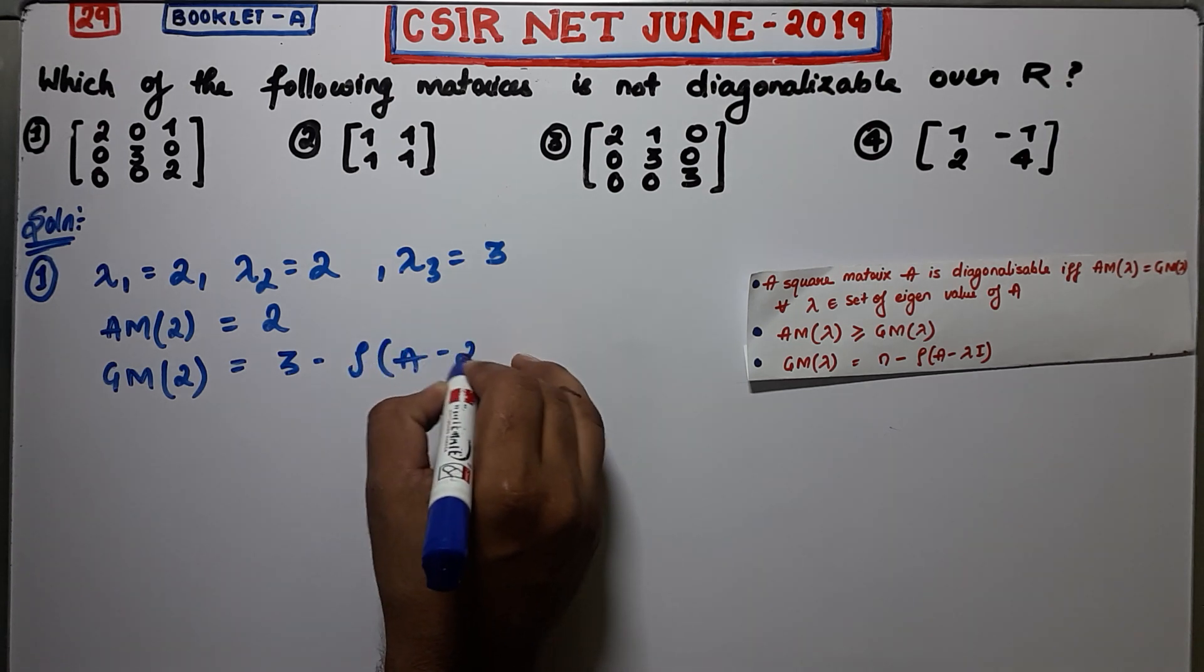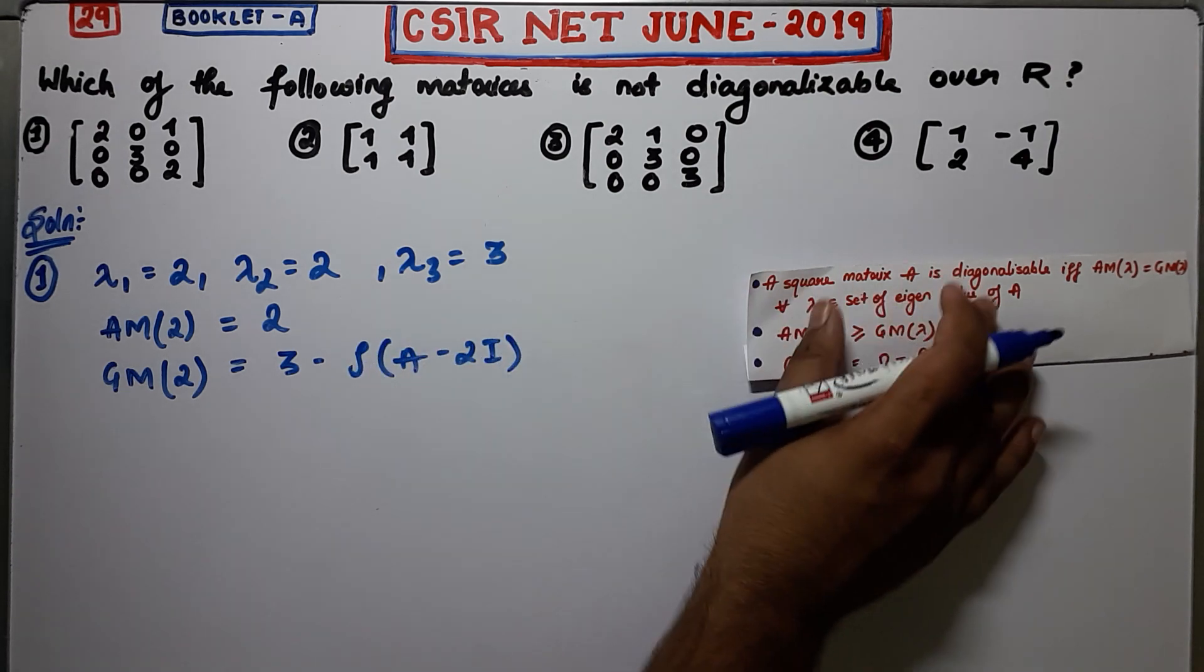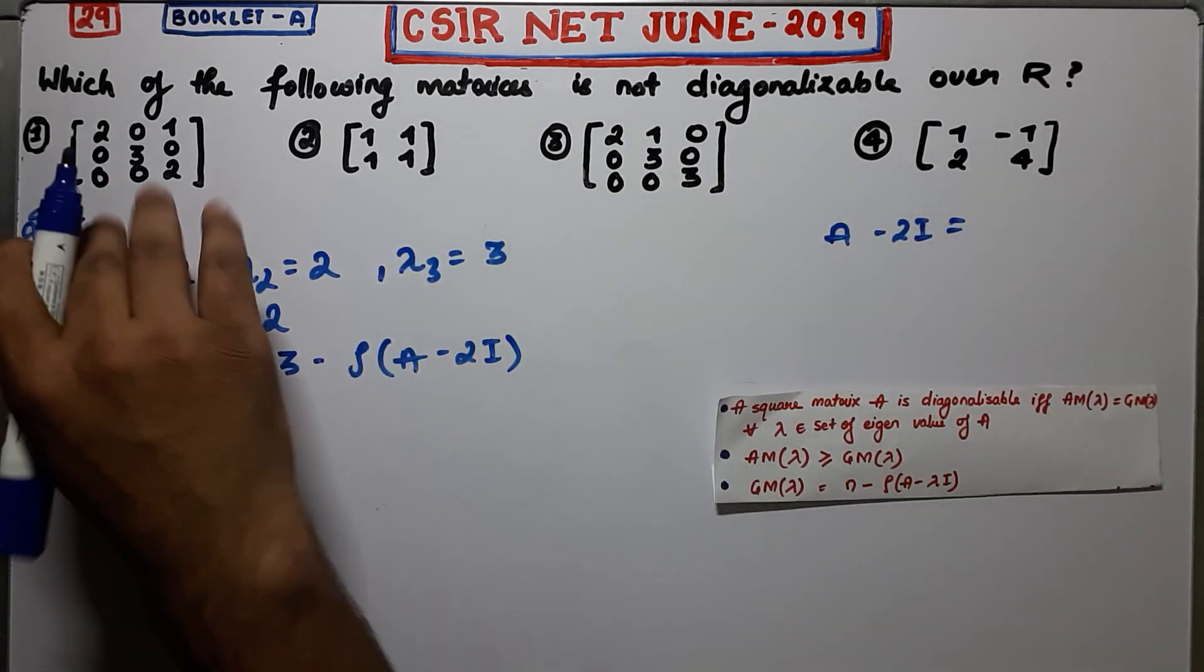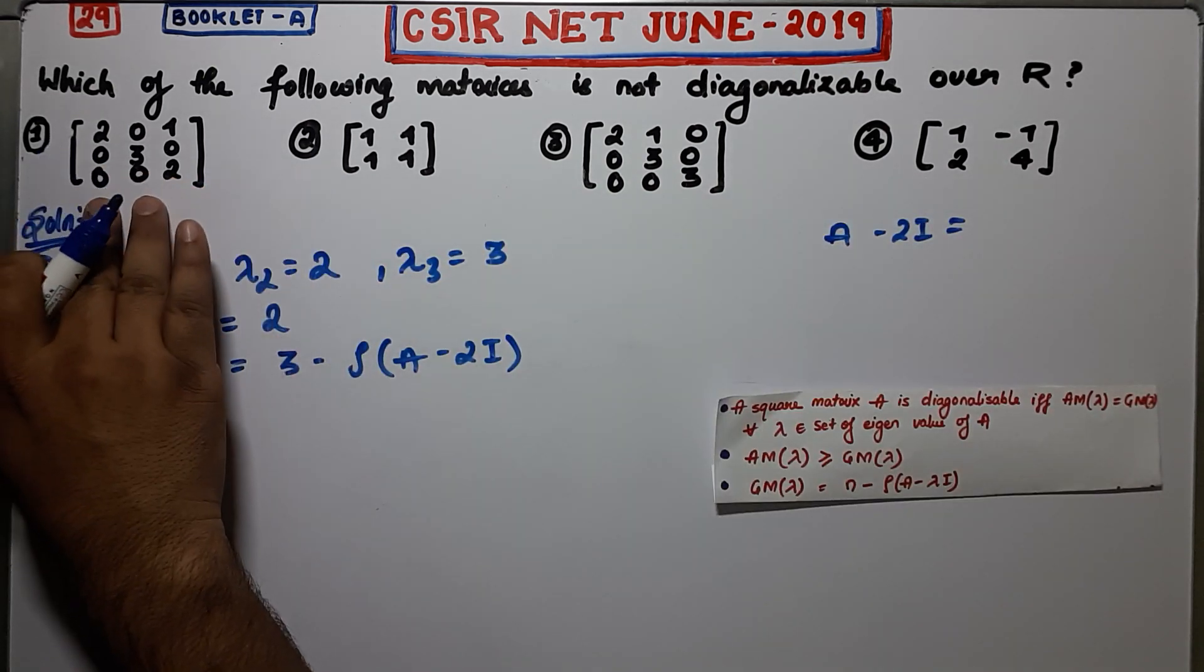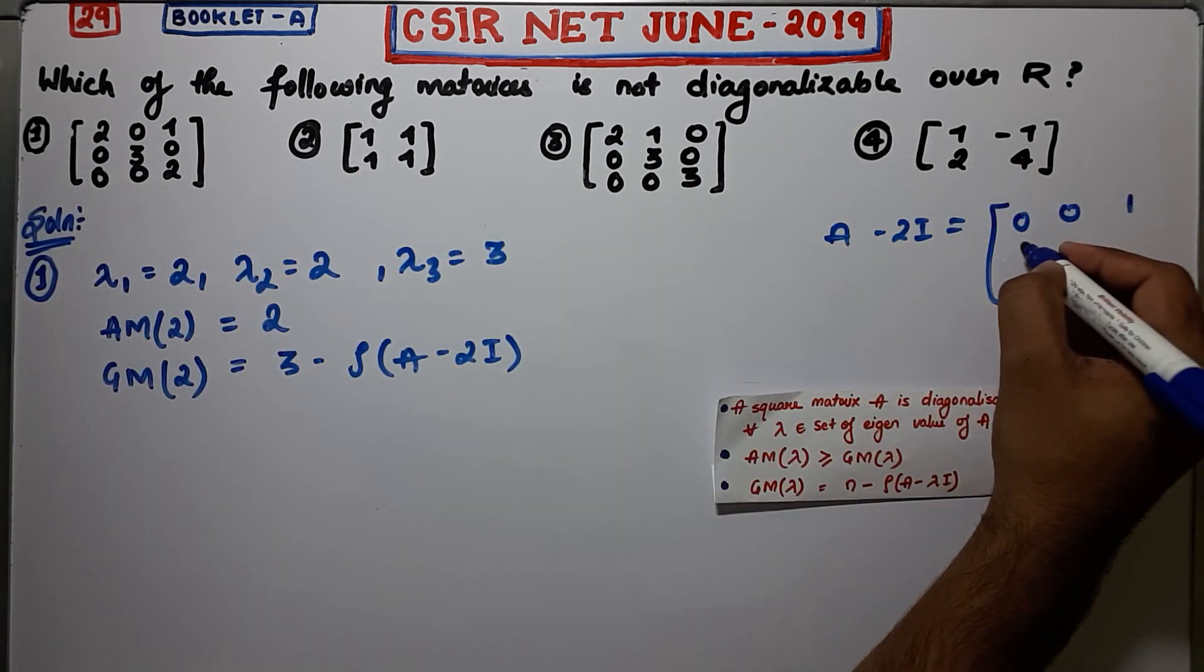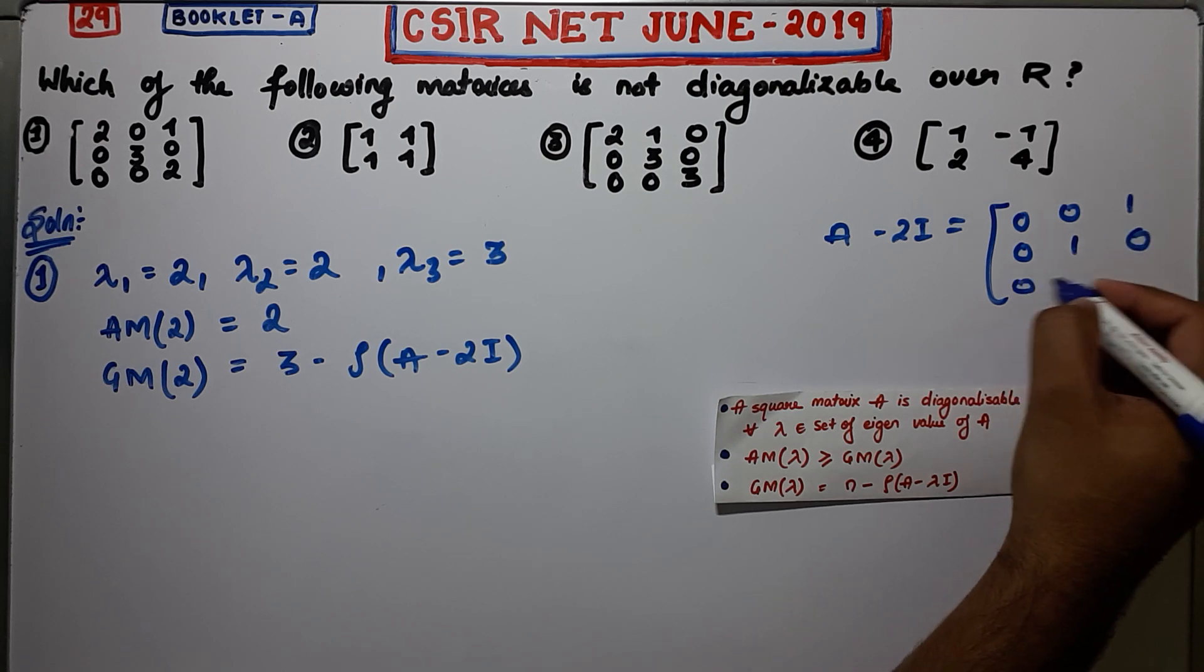Now firstly calculate A minus 2I. I am considering this matrix to be A, so A minus 2I will be the matrix with entries [0, 0, 1; 0, 1, 0; 0, 0, 0]. This will be your A minus 2I matrix.